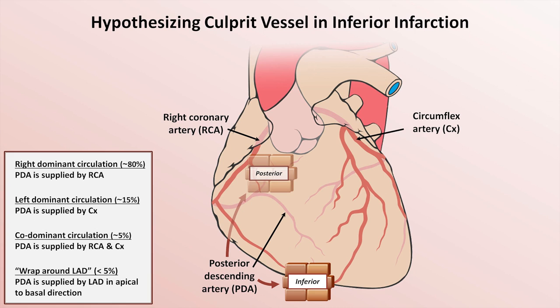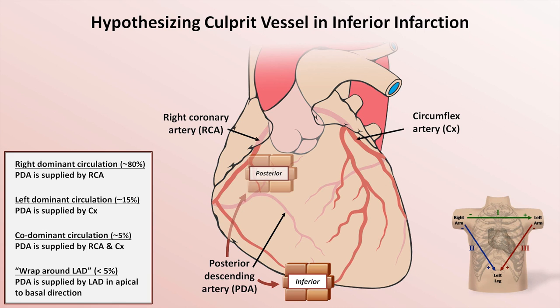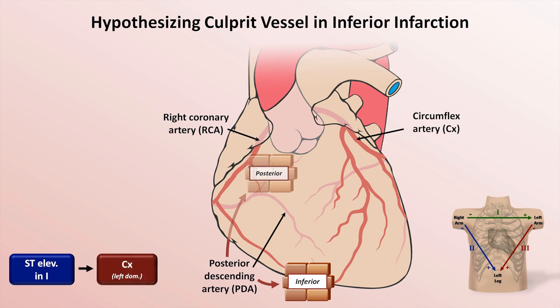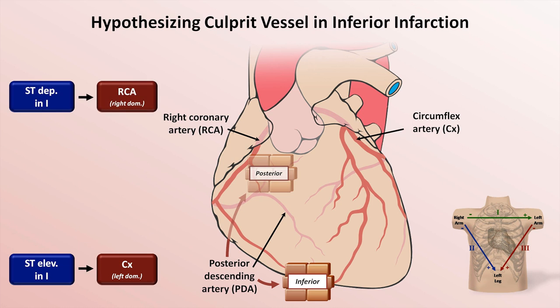I'll refresh your memory of the exact orientation of three key leads for this determination. In the event that there is concurrent ST elevation in lead 1, the circumflex is highly likely to be the culprit, as this would imply both an inferior and lateral MI, and the RCA never supplies the lateral wall. In the event that there is concurrent ST depression in lead 1, the RCA is highly likely to be the culprit.